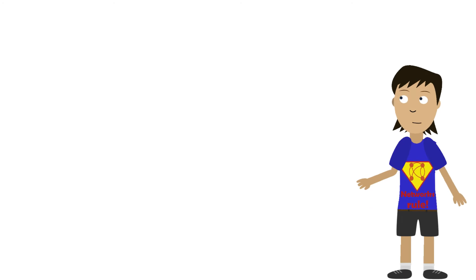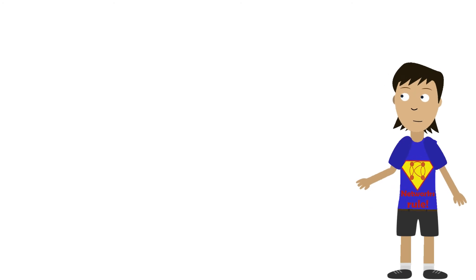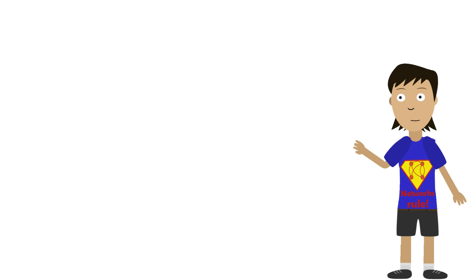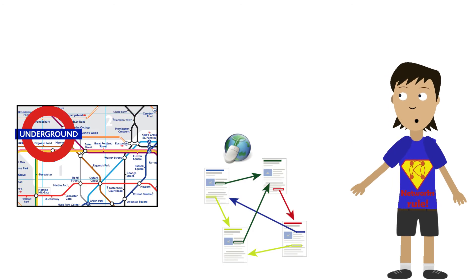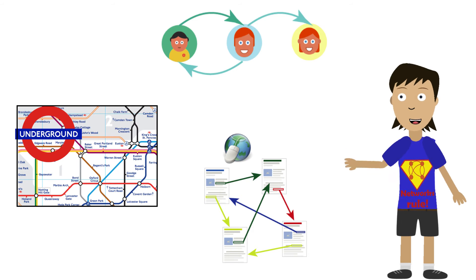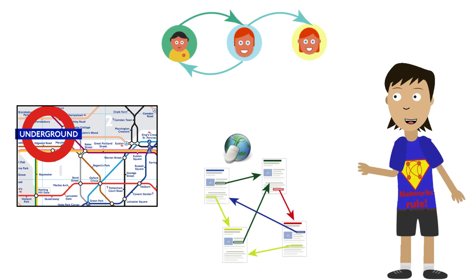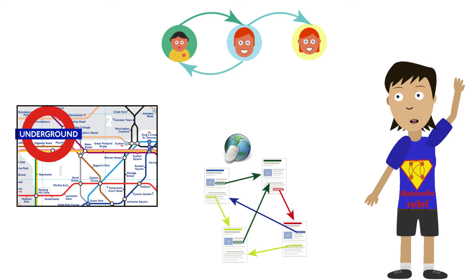Hi, I'm Nettie, the network scientist. I'm important because data on networks is everywhere. Just think about the web, technical infrastructures, or social networks. Graphs or networks are the best way to model such systems. I'm a data science superhero.